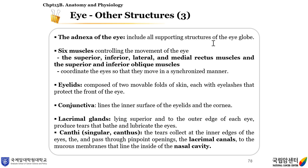The adnexa of the eye include all supporting structures of the eye globe. There are six muscles controlling the movement of the eye: the superior, inferior, lateral, and medial rectus muscles, and the superior and inferior oblique muscles. They coordinate the eyes so that they move in a synchronized manner. Eyelids are composed of two movable folds of skin, each with eyelashes that protect the front of the eye. The conjunctiva lines the inner surface of the eyelids and the cornea. Lacrimal glands, lying superior and to the outer edge of each eye, produce tears that bathe and lubricate the eyes. Tears collect at the inner edge of the eye and then pass through pinpoint openings, the lacrimal canals, to the mucous membranes that line the inside of the nasal cavity.